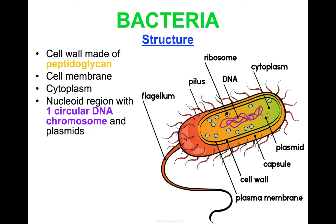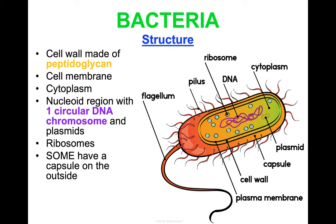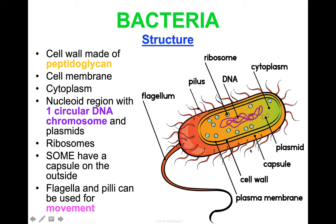We'll talk more about plasmids and antibiotic resistance later. Bacteria have ribosomes for making proteins because they're living cells, and all cells have ribosomes. Some bacteria also have a capsule on the outside of their cell wall as an additional structure. For movement, bacteria can have flagella — or just one flagellum — as well as pili, which are small protrusions all over the cell. Both flagella and pili can be used for helping them move.